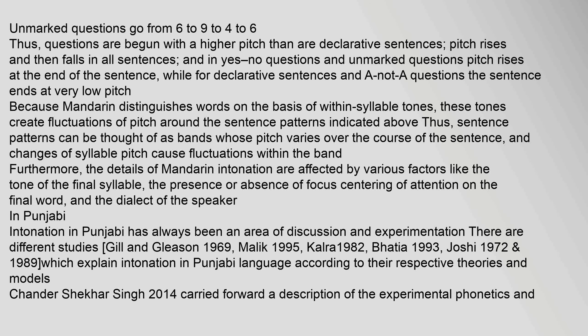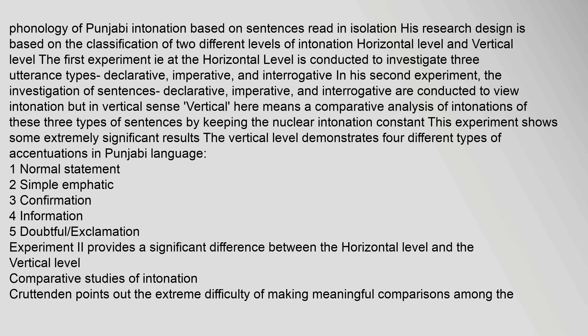Intonation in Punjabi has always been an area of discussion and experimentation. There are different studies by Gill and Gleason (1969), Malik (1995), Kaura (1982), Bhatia (1993), and Joshi (1972). Research on the phonology of Punjabi intonation based on sentences read in isolation classifies two different levels: horizontal level and vertical level. The first experiment at the horizontal level investigates three utterance types: declarative, imperative, and interrogative. The vertical level involves a comparative analysis of intonations by keeping the nuclear intonation constant, and demonstrates four different types of accentuations in Punjabi.